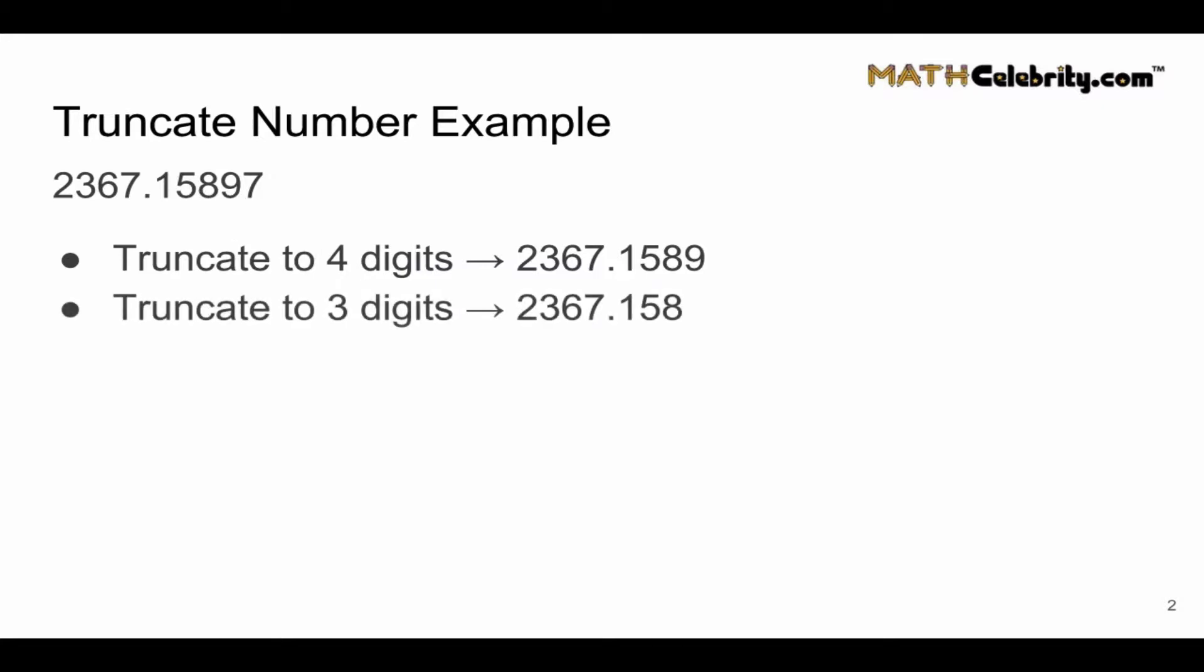How about if we truncate to three digits? Well, now we're chopping off the 97, so we're left with 0.158. Two digits, we're going to chop off everything after the 0.15. And of course, one digit, we're going to chop off everything after the 0.1. So you get the picture here.